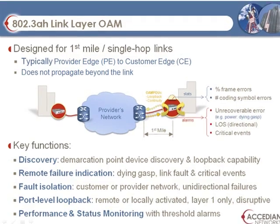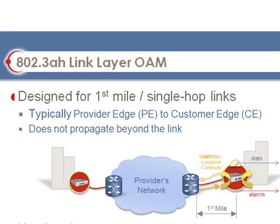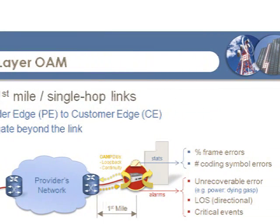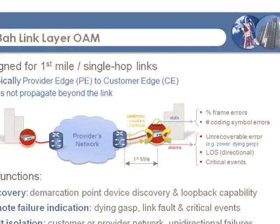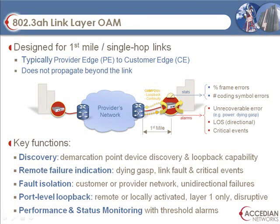The 802.3AH standard, now ratified as 802.3-2005, is better known as OAM for Ethernet in the First Mile, or EFM. This standard was designed to manage the single hop from the closest access platform to the customer premise, helping operators maintain reliable service in this typically problematic part of the network. Key functions include discovery of the CPE, remote failure indication to notify the provider if a power outage or CPE failure occurs, fault isolation to identify whether a problem occurred within the provider or customer's network, a simple port-level loopback function to check traffic transmission performance, and basic performance and status monitoring capabilities with alarm support.